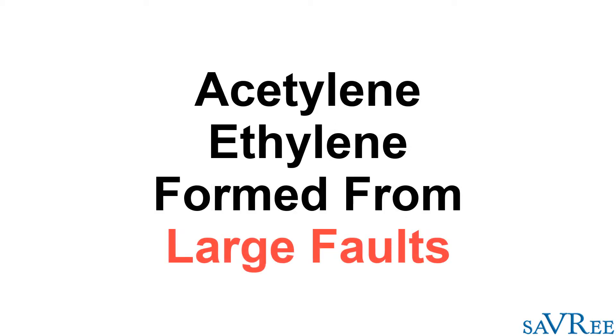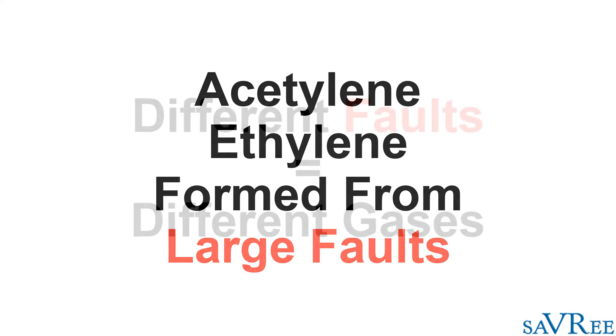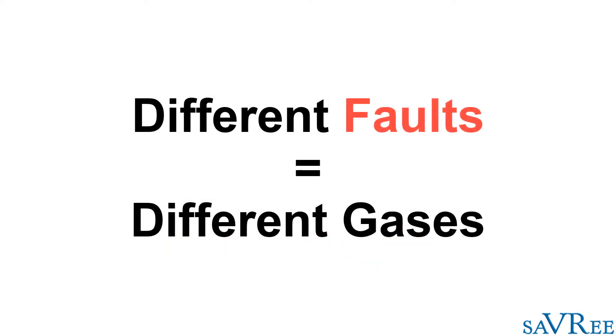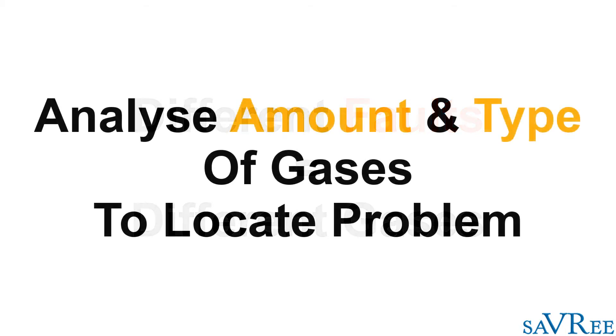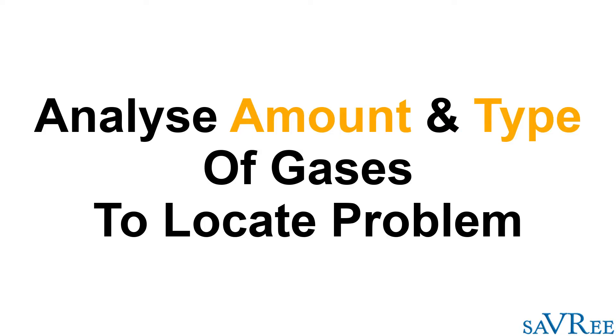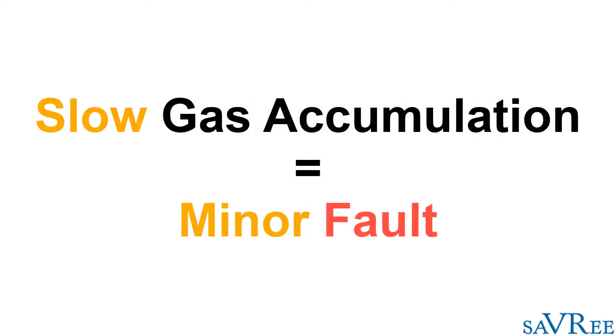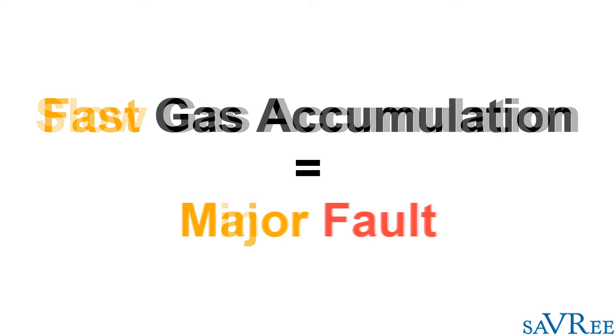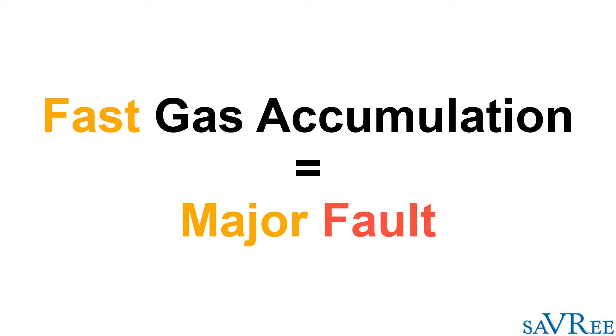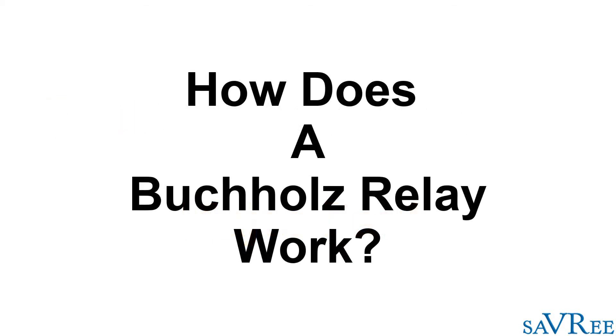When you have lesser faults or faults with not such a large amount of energy, then you will produce different gases. But the key point to remember here is that any fault, small or large or medium, is going to create some sort of gas. The amount of gas is very interesting and worth analyzing. You may get a slow trickle of gas coming out of the transformer, which means you have a low partial discharge maybe within the transformer itself. However, you may also get a very large fault, and this sudden fault creates a lot of gas very quickly.